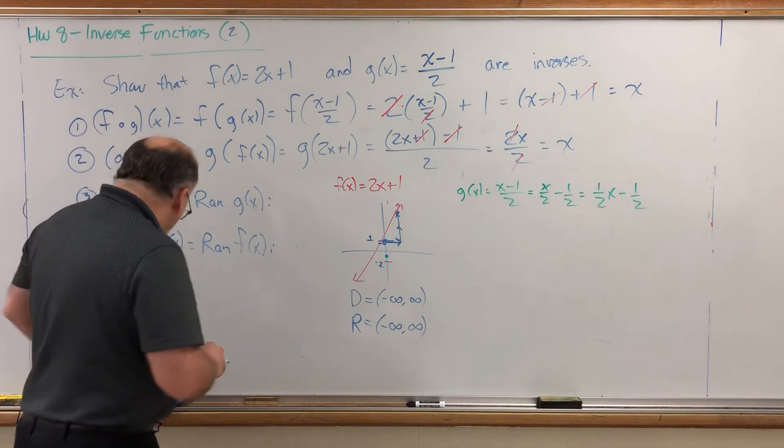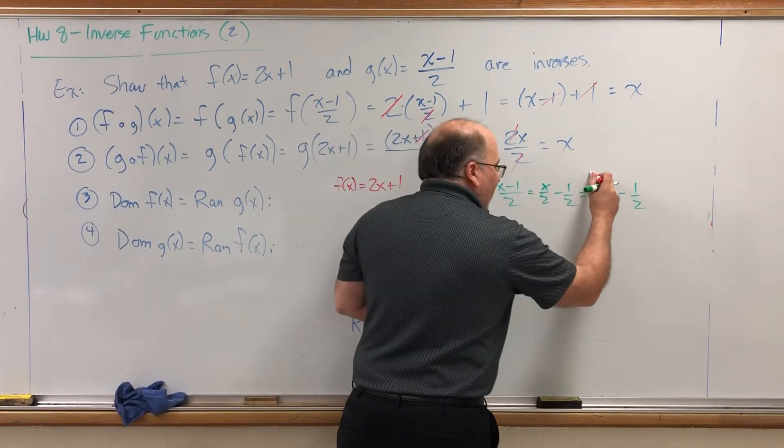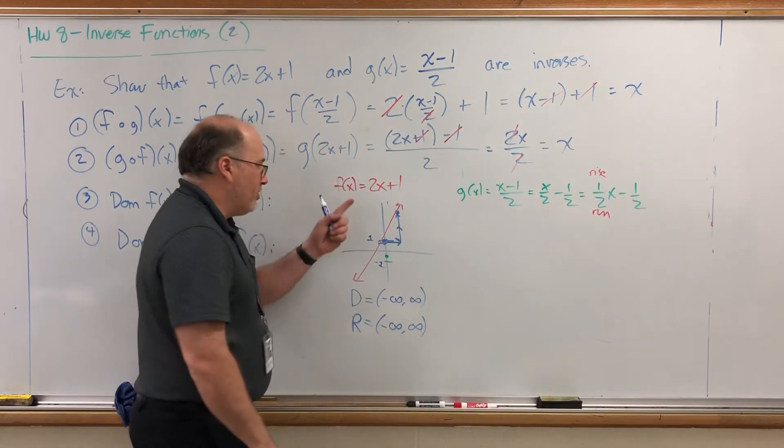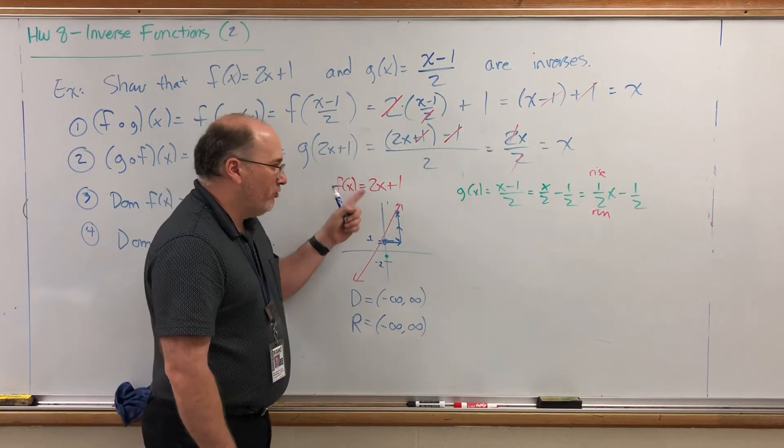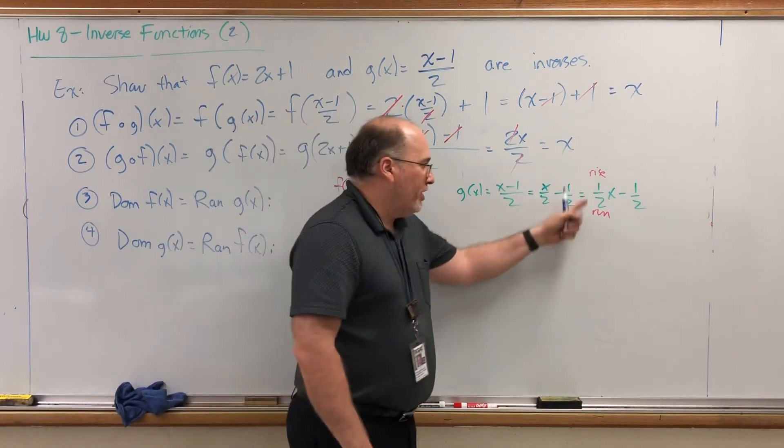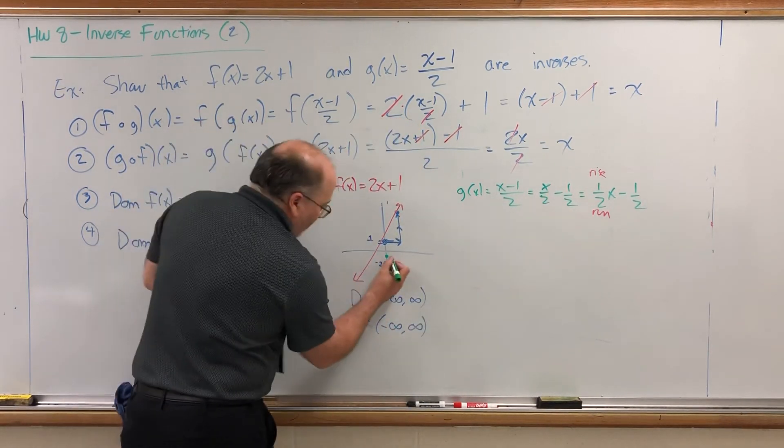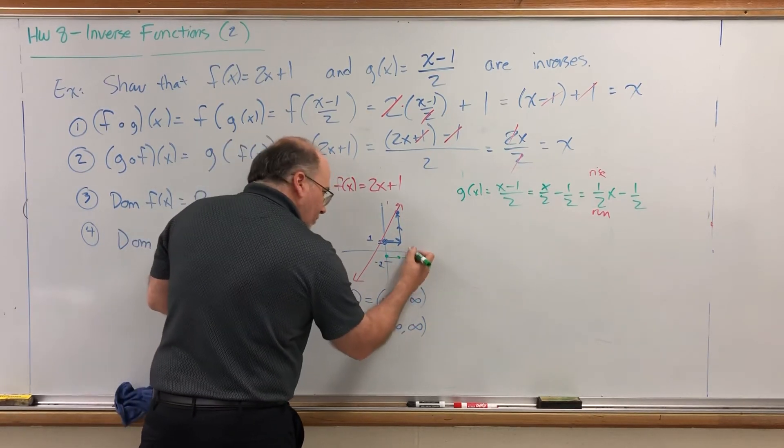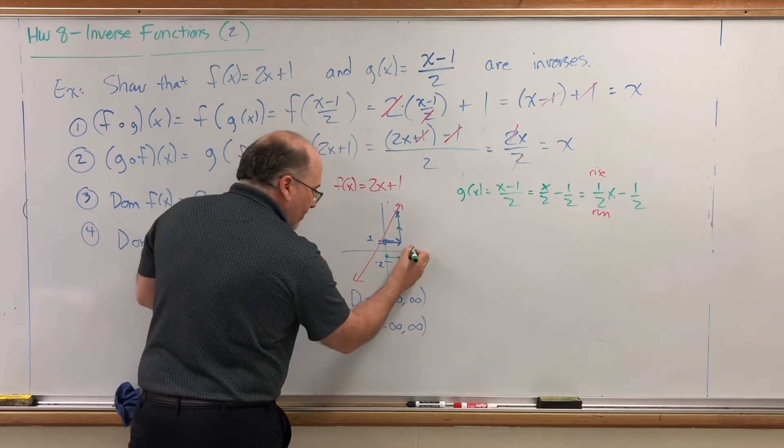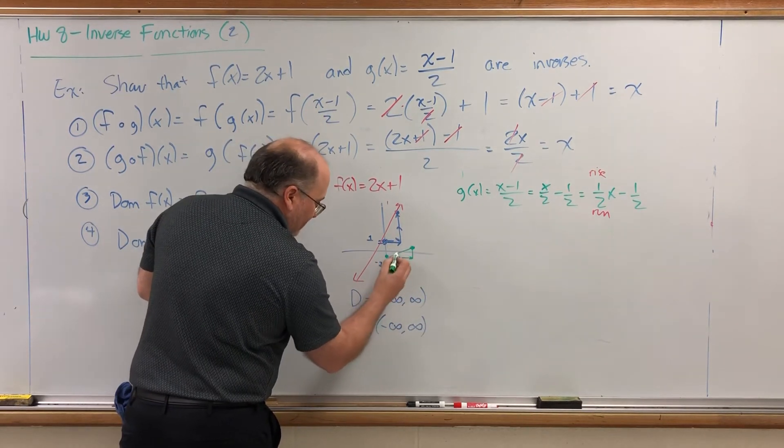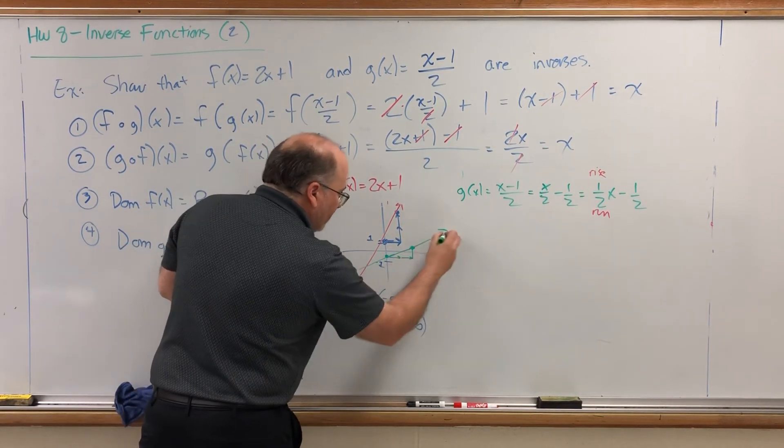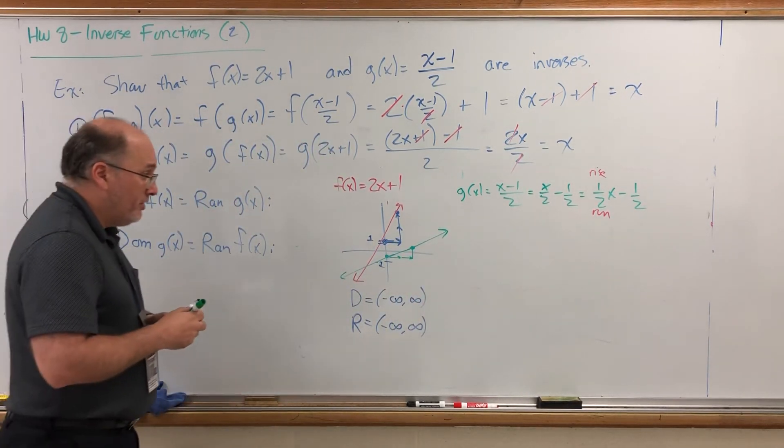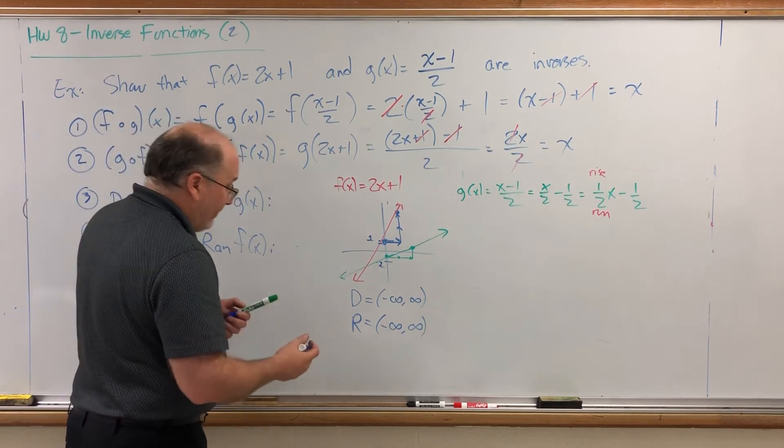But what about the slope of the second function? It's 1 half. Rise over run. So unlike over here, where I run 1 and rise 2, here I'm running 2 and rising 1. So if I run 2 and then rise 1, remember I'm down a half, so rising 1 will put me up there. Then I get this line, whose domain and range are both negative infinity to infinity.